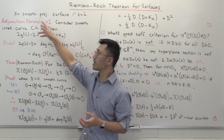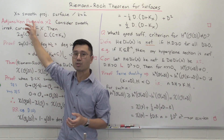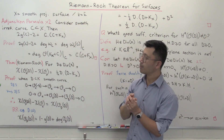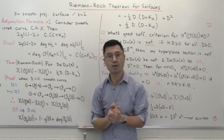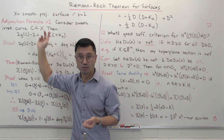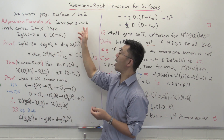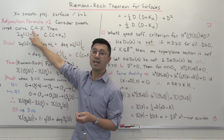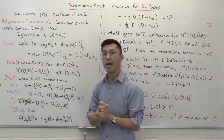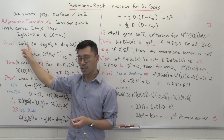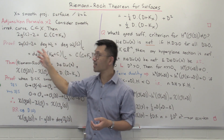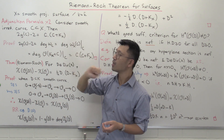Let's fix our starting data. X will be my smooth projective surface over the algebraically closed field K. Before I move on to the statement of the Riemann-Roch theorem for surfaces, I want to give another version of the adjunction formula. Suppose C is some smooth irreducible curve on my surface. Then I have a formula for the genus of this curve in terms of the numerical intersection theory on the surface.